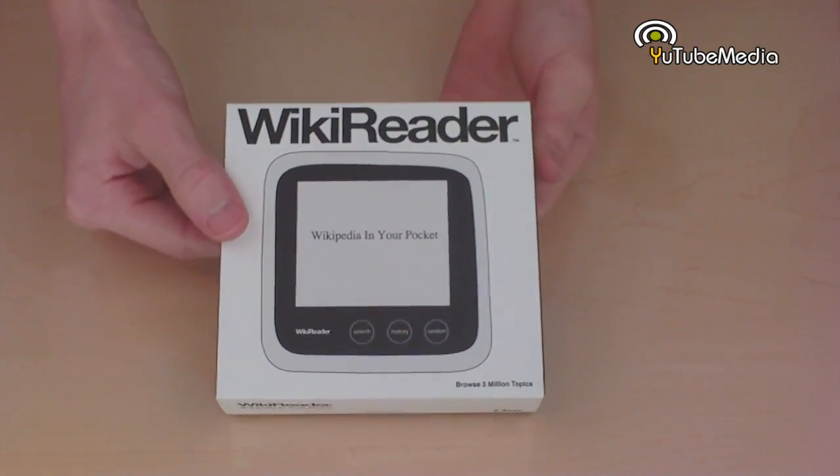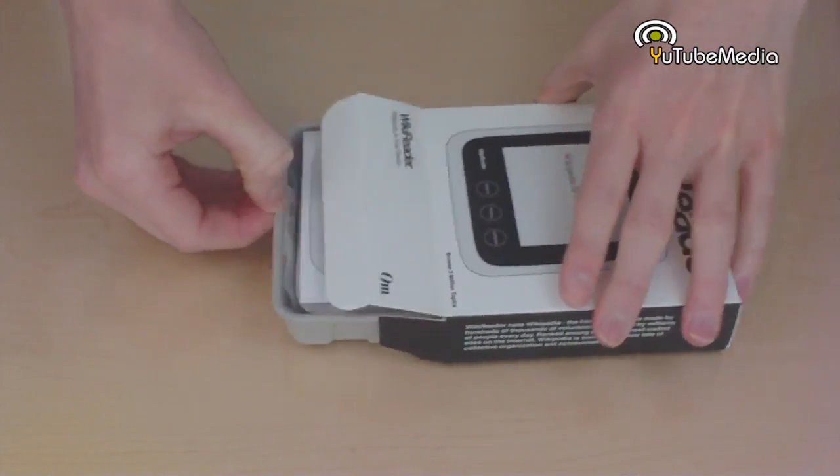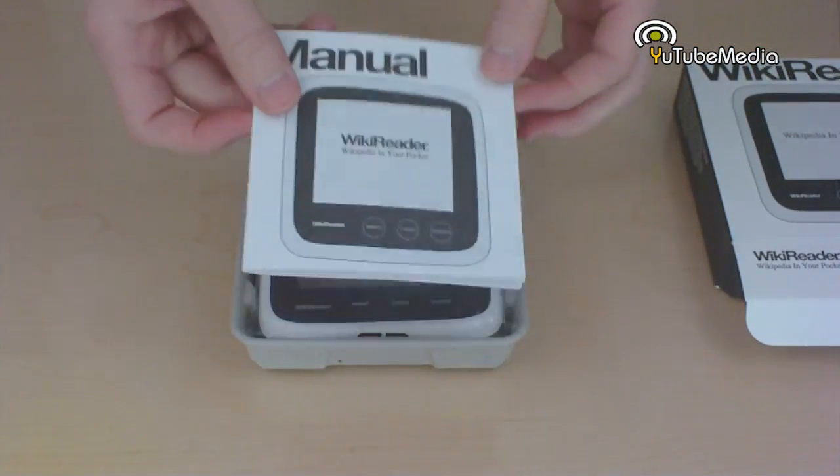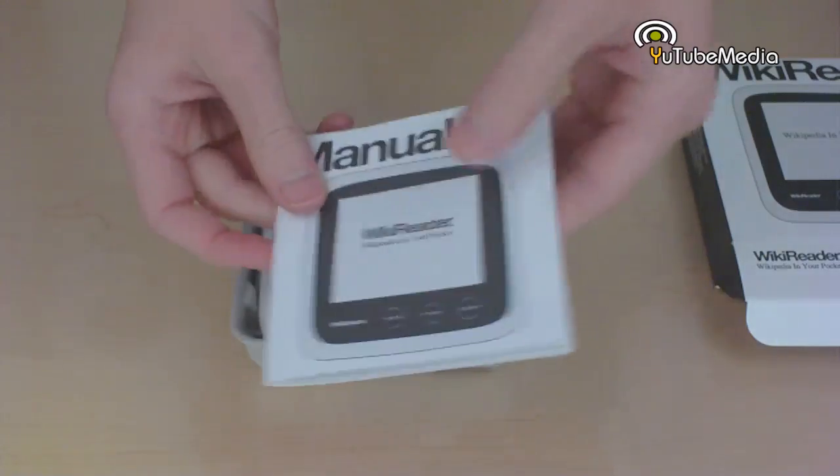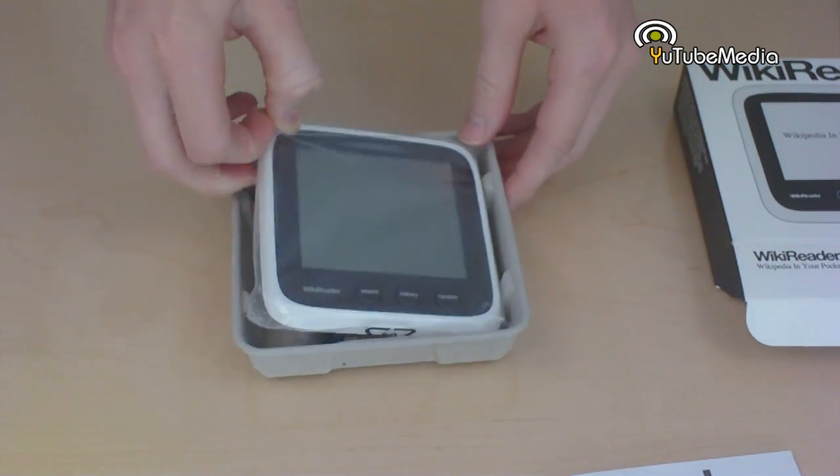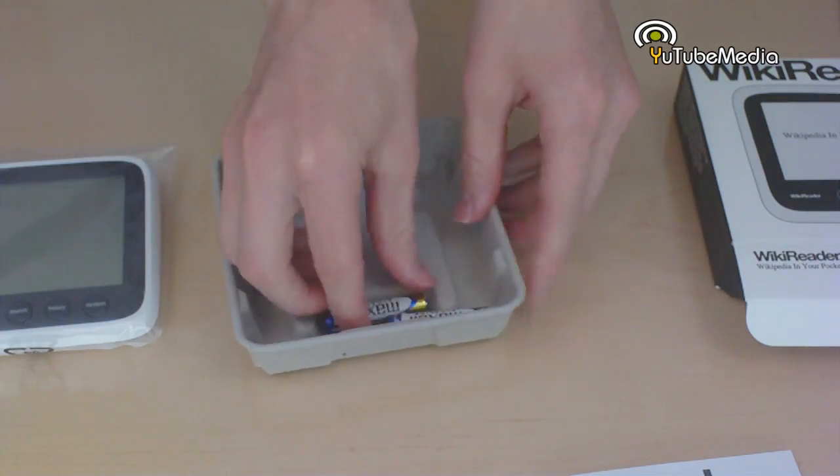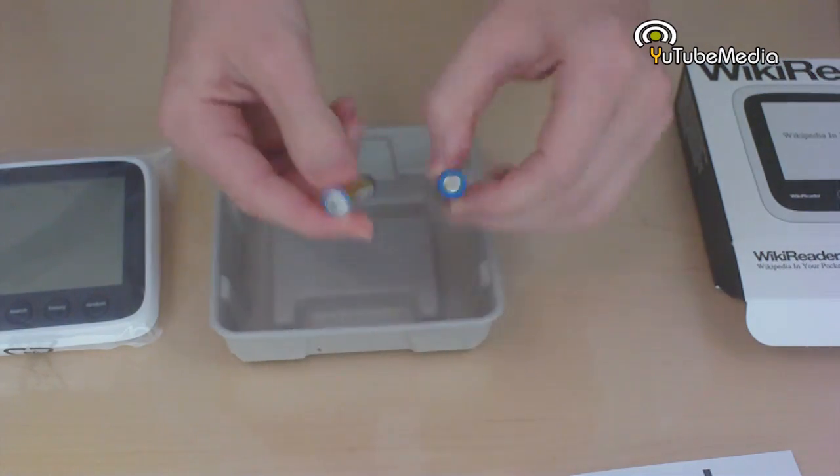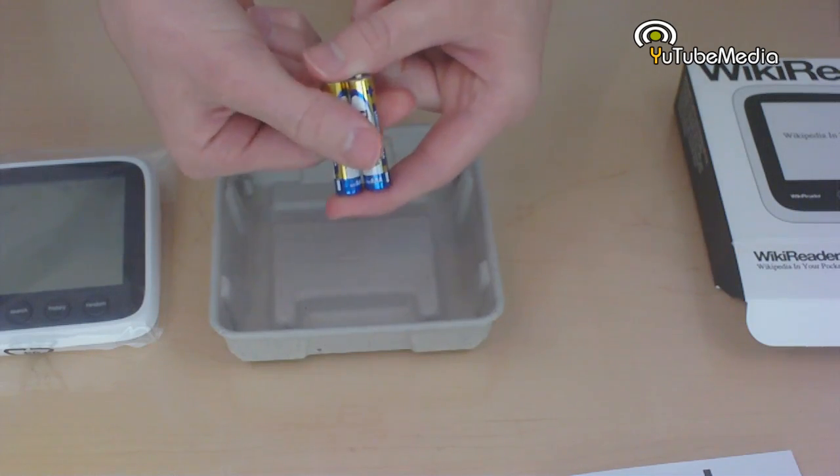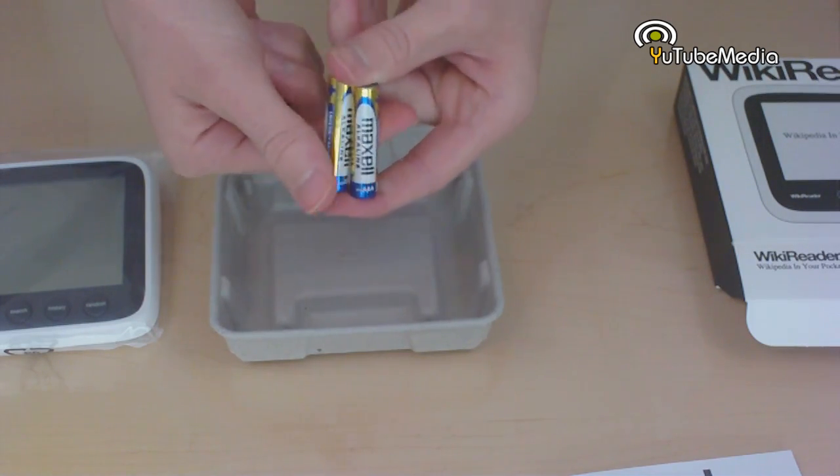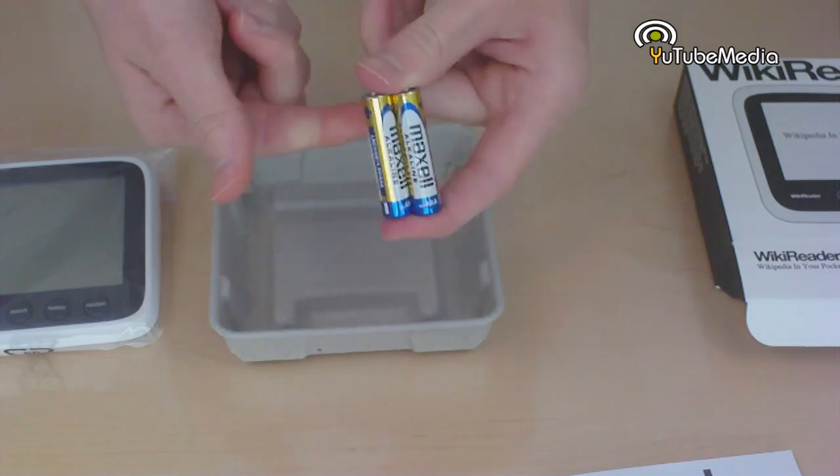So let's go ahead and unbox this. Here is the manual, a real quick and easy one to figure out. And here is the WikiReader itself. It also comes with two AAA batteries. It does run on AAA batteries but don't worry, it has a one year battery lifetime, 90 hours. So you won't have to replace these for a full year.